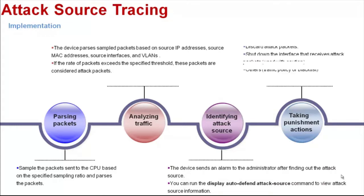Step 4: Punishing the Attack Source. There are two punishment methods: first, drop the attack packets; second, shut down the interface that receives the attack packets. Exercise caution when using this action, because all user services on this interface will be interrupted after the interface is shut down. After the attack source is found, you can configure a traffic policy or blacklist on the device to further process the attack.